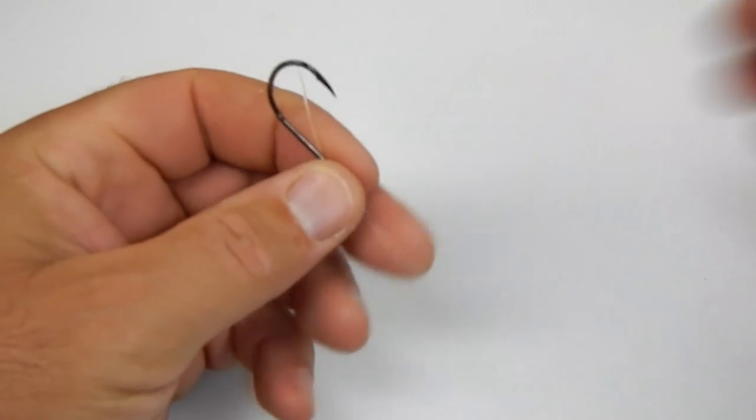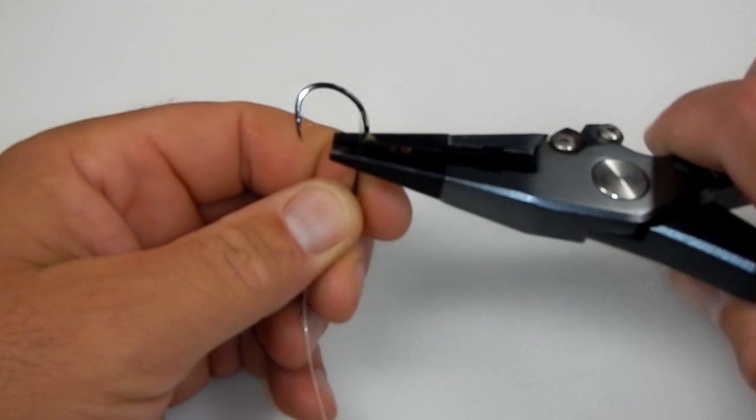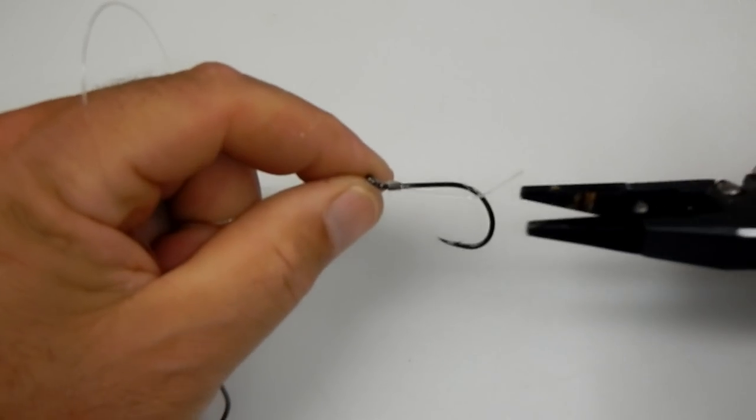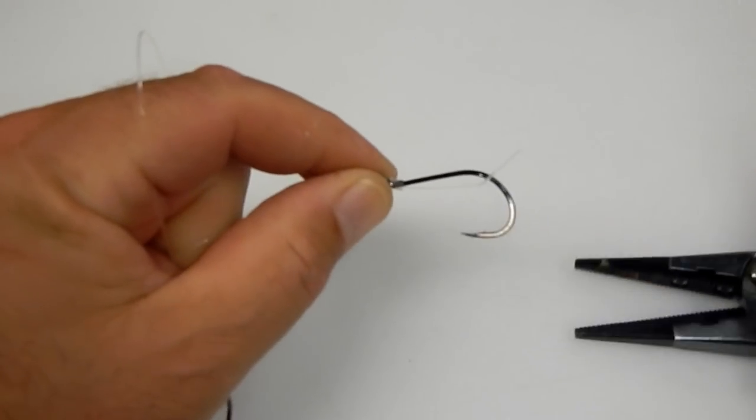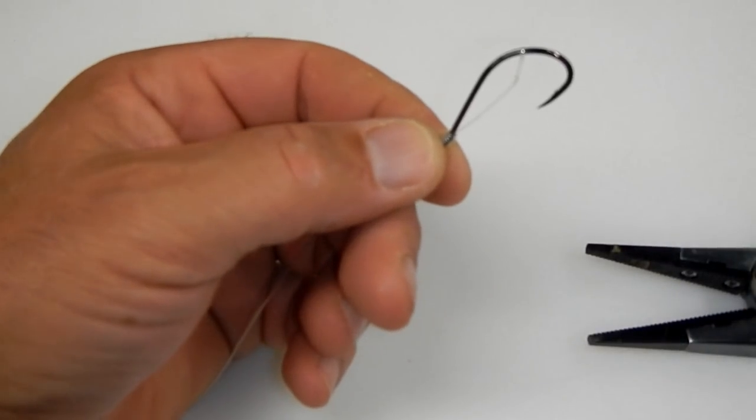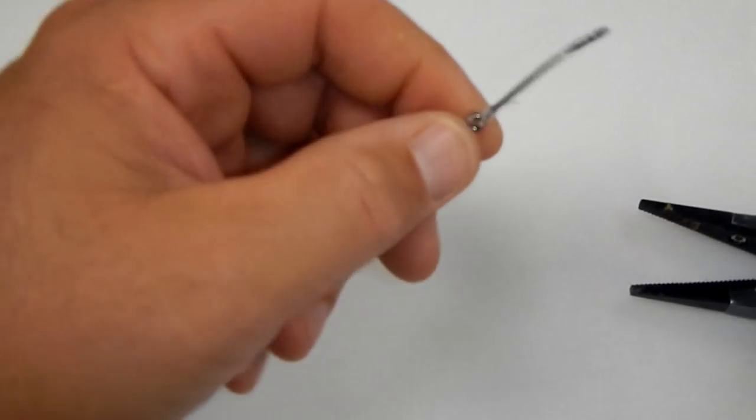Slide it up, grab a plier and pull down on it just to tighten it up. Now you have a hook on both ends of the line. Let's get that tag end off like we did with the other one.